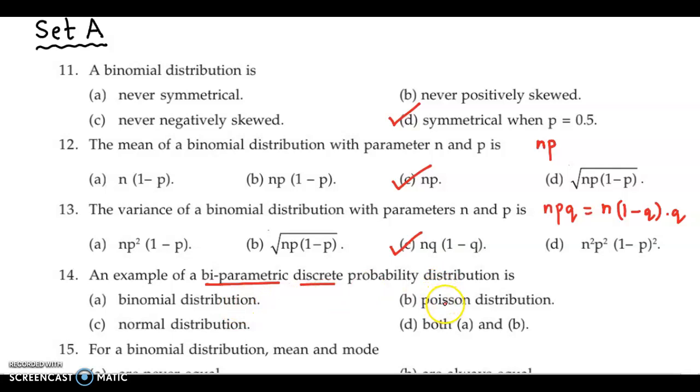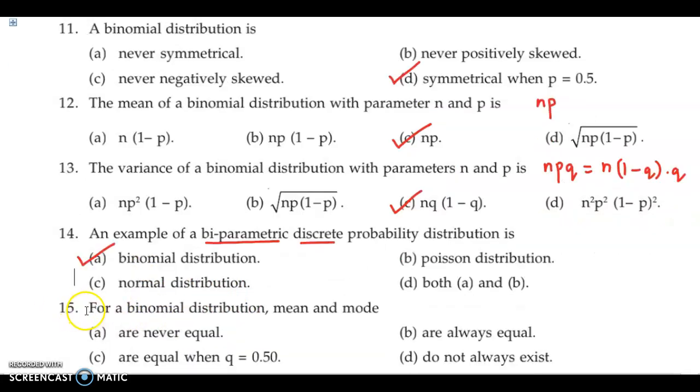Poisson's is a uniparametric discrete distribution. Normal distribution is biparametric but it is a continuous probability distribution. So the correct answer is option A, binomial distribution.